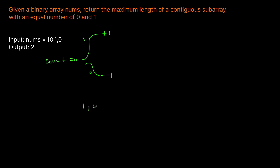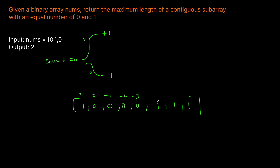Let's look at a different example: zero, one, zero, zero, zero, one, one, one. We start count at zero. We see the one, count becomes plus one. We see a zero, count goes to zero. We see another zero, it's minus one. Another zero, minus two. Another zero, minus three. We see a one, so we add one, it becomes minus two. Then another one, it becomes minus one. Then we add one more, and we have zero. The points where count hits zero are here and here — those are potential solutions.